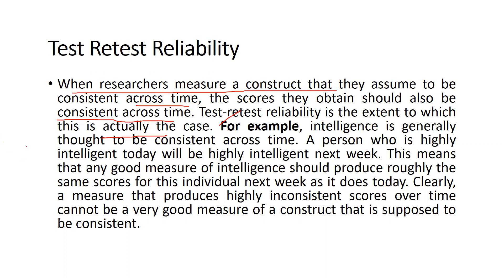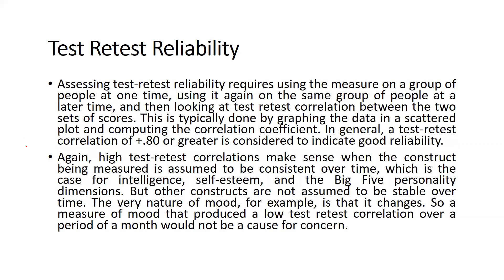Assessing test-retest reliability requires using the measure on a group of people at one time, then using it again on the same group at a later time, and looking at the test-retest correlation between the two sets of scores. This is typically done by graphing the data in a scatter plot or computing the correlation coefficient, which should be 0.80 or greater. Then we can say it is reflecting good reliability. High test-retest correlation makes sense when the construct is assumed to be consistent over time, as is the case for intelligence, self-esteem, and the Big Five personality dimensions.